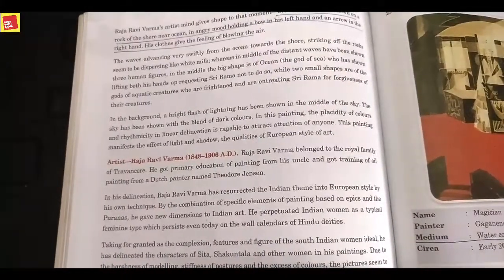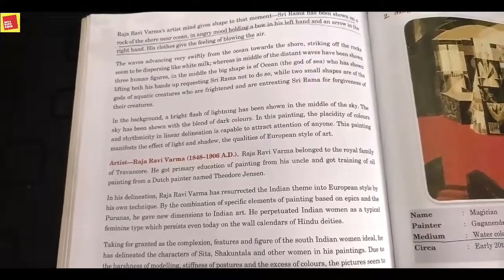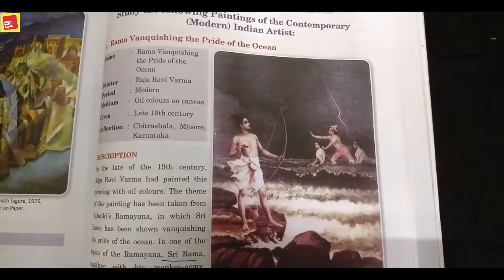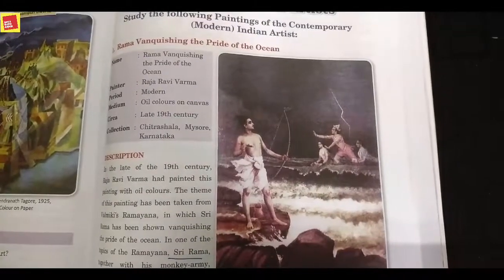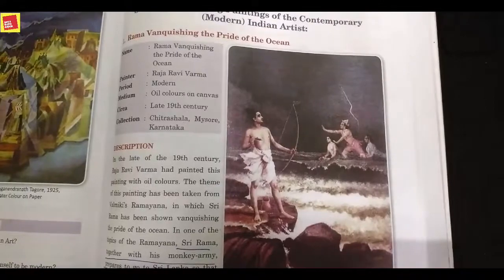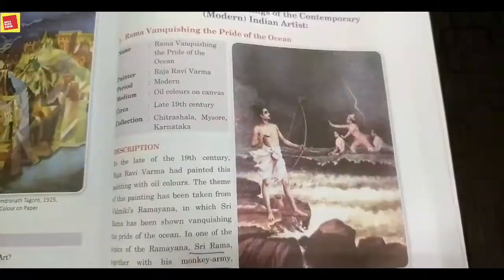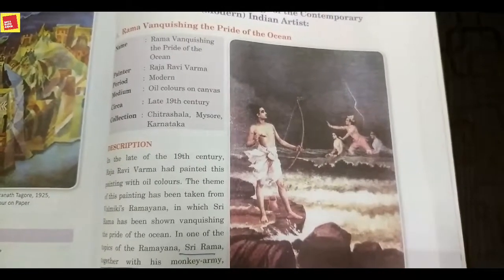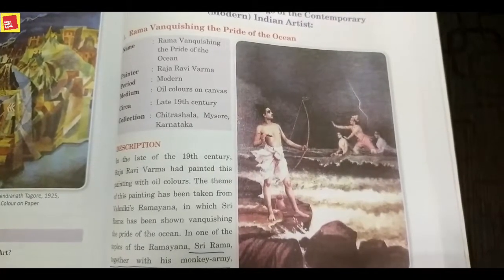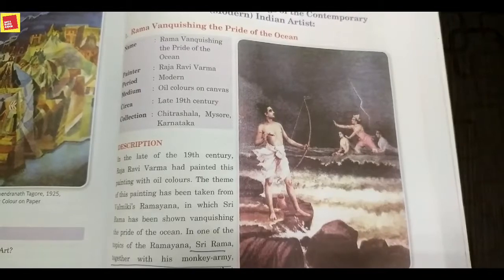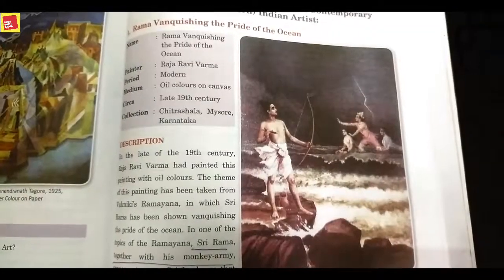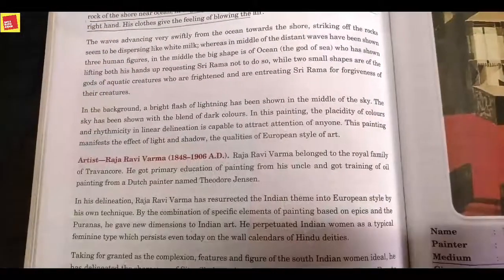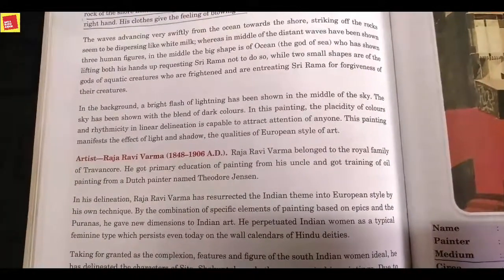In the middle distance of the ocean, three human figures have been shown — the god Varun and his two wives. Dark colors have been used overall in this painting. The ocean is shown in a pure milk-white color. Rama is wearing a white dhoti, god Varun is wearing a pink dhoti, and his two wives are wearing sarees. In the background, a bright flash of lightning is also visible.